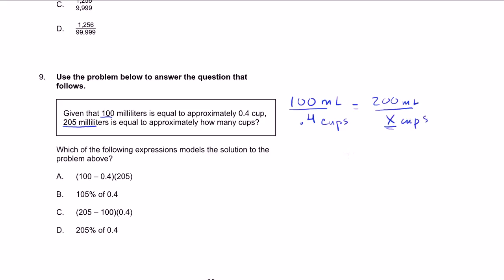And so we just have to solve for x. To solve for x, we could essentially cross multiply, which is essentially just multiplying both sides of the equation by both denominators. So we get 100x. 100 times x is equal to 200 times 0.4.